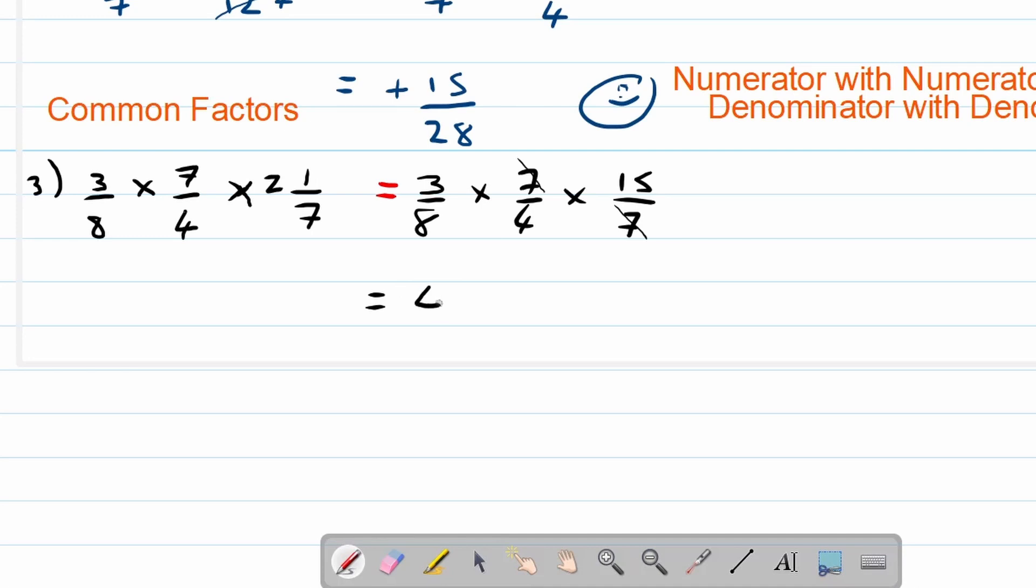So we can say 3 times 15 is 45. And 8 times 4 is 32.